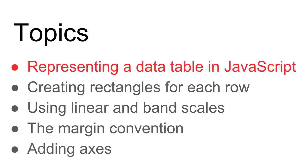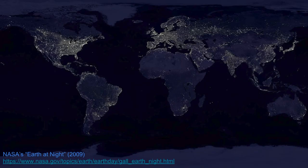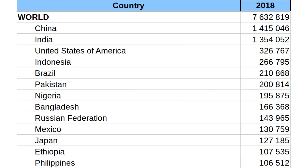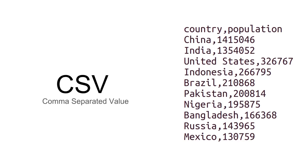Let's start by representing a data table in JavaScript. I came across this awesome image, Earth at Night by NASA, and it got me wondering what are the biggest countries in terms of their population. This dataset from the United Nations contains the population of every country. I downloaded this Excel file, then isolated the top countries by population of 2018. Then I exported this as a CSV file and did some hand tweaking to make the column names nice — country and population — and also removed the spaces from the numbers.